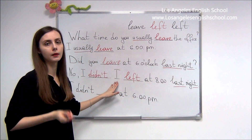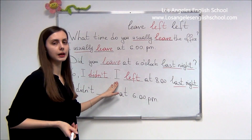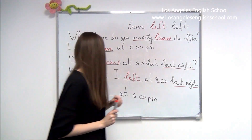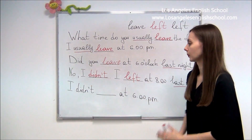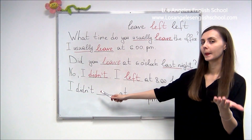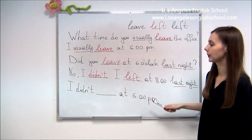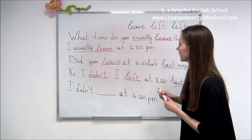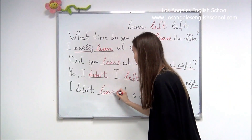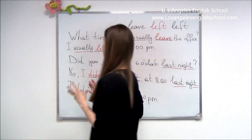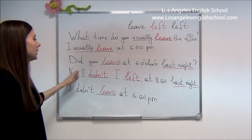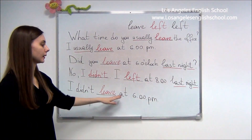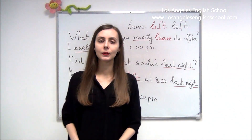I left at 8 last night. When we have a negative sentence, don't forget to use the helping verb 'didn't': I didn't leave at 6 p.m. Why 'leave'? Because we have 'didn't,' and 'didn't' indicates that this is past simple. Let's repeat: 'Did you leave at 6 o'clock last night? No, I didn't. I left at 8 last night. I didn't leave at 6 p.m.' Now let's go to the next part and practice another verb.